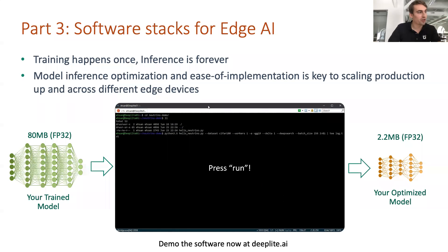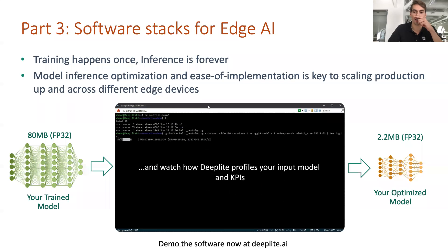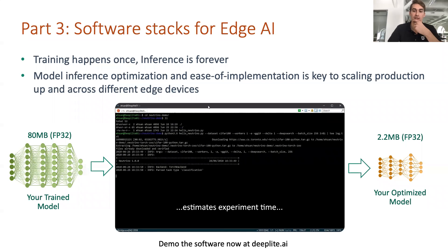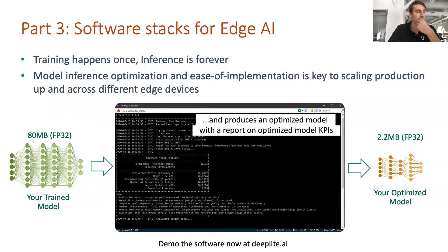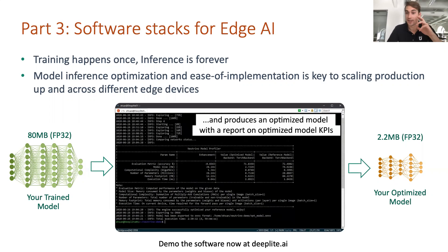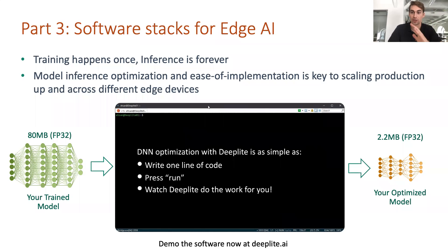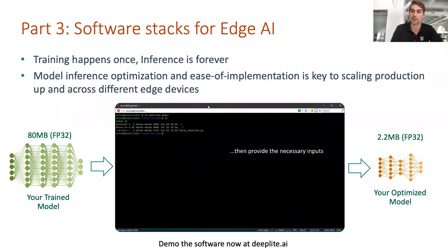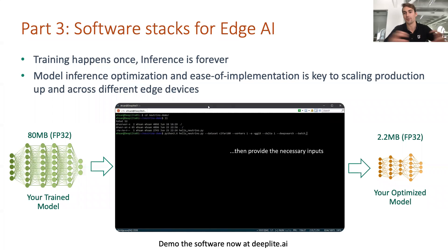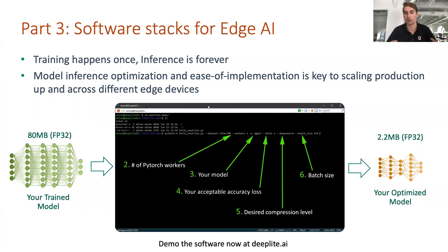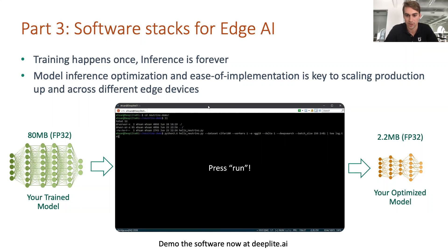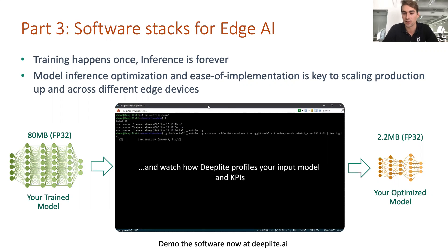Regarding the output file format for saving optimized models: in this example you see ONNX — Open Neural Network Exchange — to port between different inference engines like TensorRT or others. At Deep Light we also output PyTorch as a PTH file, and currently have a Keras/TF version in beta. The idea is to be as interoperable as possible so you can take the software's model and run it on different various software stacks.